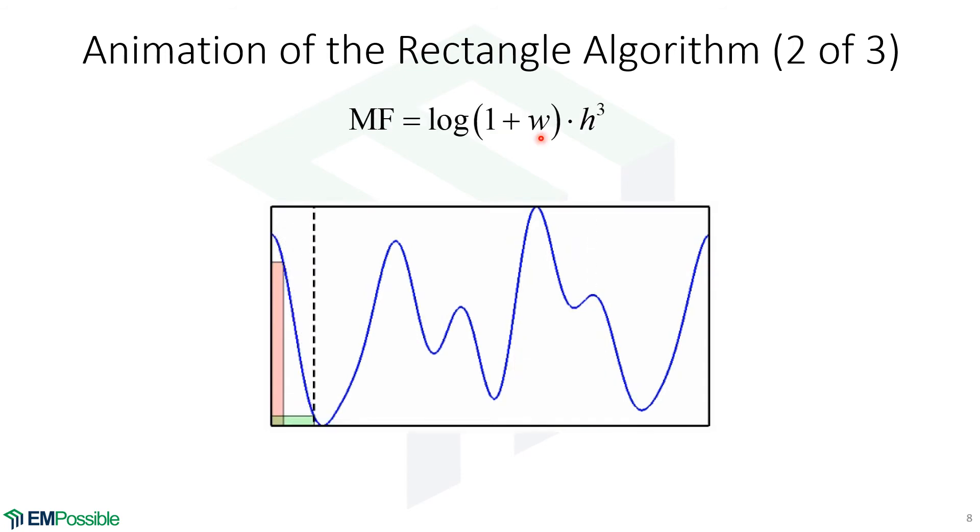We're suppressing the importance of the width and enhancing the importance of the height. So given this new way to weigh those, now what is the biggest rectangle? We're searching the same way. We go point by point over the spectrum. We figure out what the rectangle size is and when the area of that rectangle, according to our new calculation of area, which technically isn't an area, it's looking for the merit function. So here's the red rectangle. This becomes the new merit function with width being suppressed and height being enhanced. What would happen if we did it the other way around?